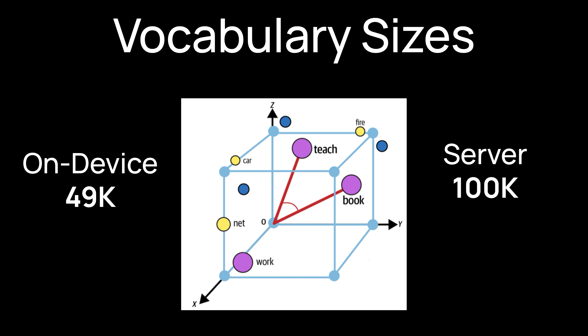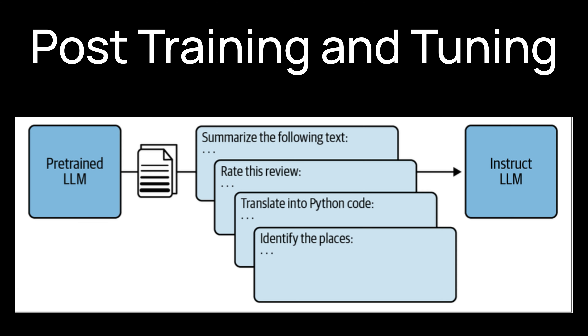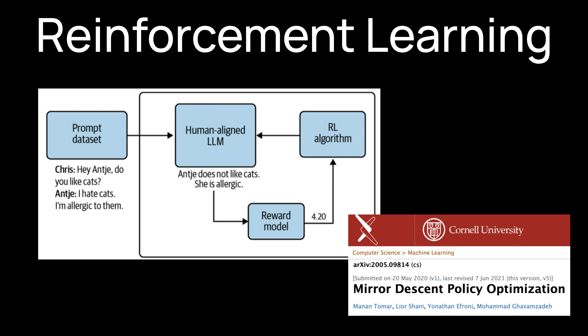The vocabulary size of the on-device foundation model is 49,000 tokens, while the vocabulary size of the server model is 100,000 tokens. After the model is trained, it moves into the post-training and tuning phase. Post-training involves fine-tuning the pre-trained models to adapt to specific tasks. Apple employs techniques like transfer learning and knowledge distillation to enhance the model's performance on specialized applications. This phase ensures that the models are not just theoretically powerful, but also practically effective in real-world scenarios.